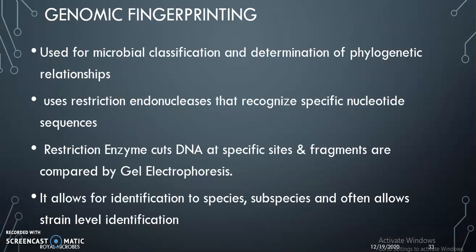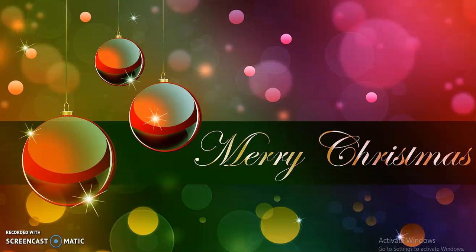Genomic fingerprinting is used for microbial classification and determination of phylogenetic relationships. Restriction endonucleases are used to cut the DNA at specific sites, making small nucleotide sequences. The fragments obtained are compared by gel electrophoresis. That's all about bacterial taxonomy. Hope you all understand this section. Thank you, have a nice day and wishing you all a very happy Christmas.